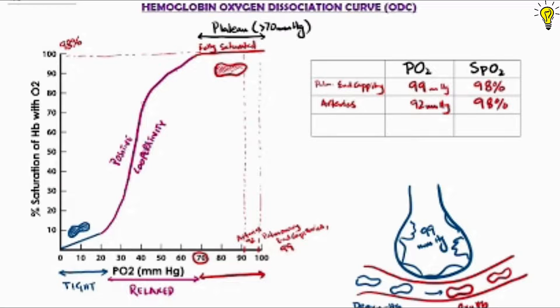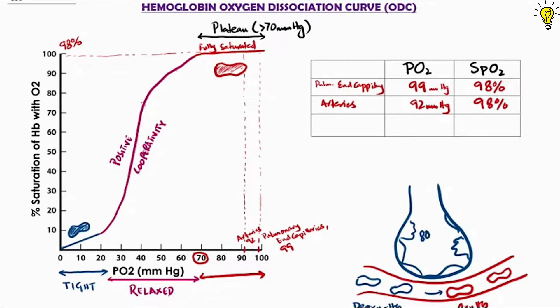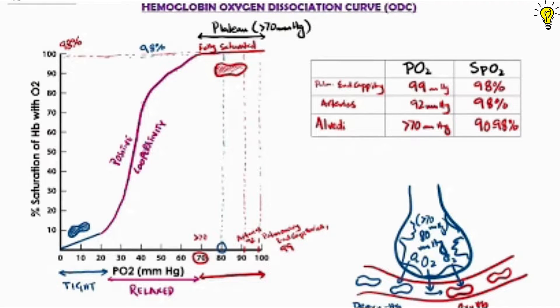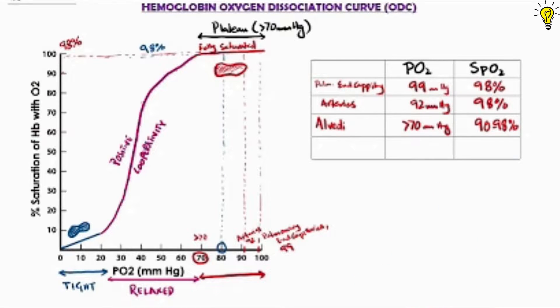Suppose for some reason now alveolar pressure of oxygen falls to 80 mmHg. Still the dissociation curve is falling within the upper plateau range. So hemoglobin would still take away maximum oxygen, meaning fully saturated, while it leaves the alveoli. So as long as alveolar oxygen pressures are above 70, hemoglobin passing along the alveolar wall will continue to stay in upper plateau fully saturated phase.